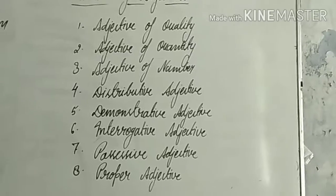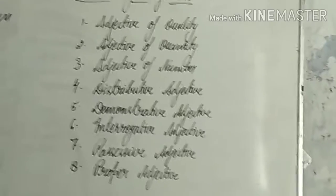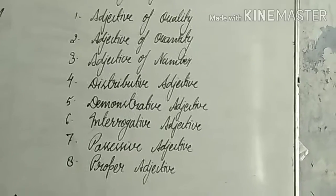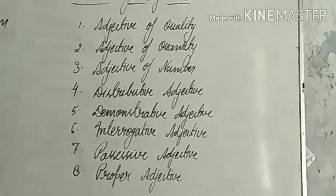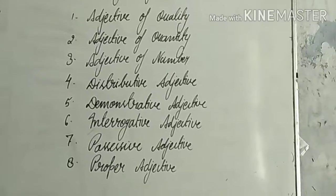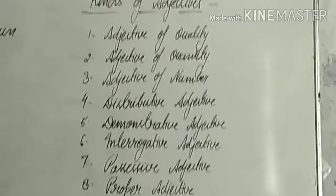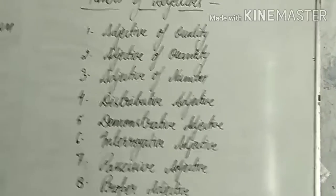Distributive adjective includes words like each, every, either, neither — these are called distributive adjectives. Demonstrative adjective includes this, that, these, those — these are called demonstrative adjectives.